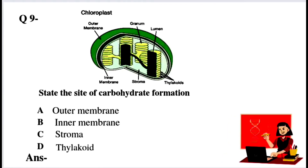Question number 9: State the site of carbohydrate formation in chloroplast. Option A: outer membrane. Option B: inner membrane. Option C: stroma. Option D: thylakoid. Carbohydrate formation is a light-independent process — the dark reaction — which occurs in the stroma of the chloroplast. Option C is the right answer.